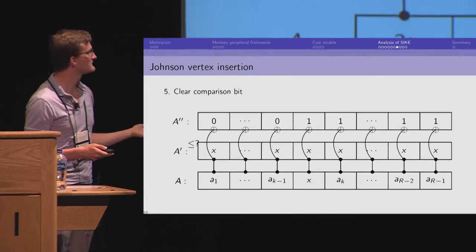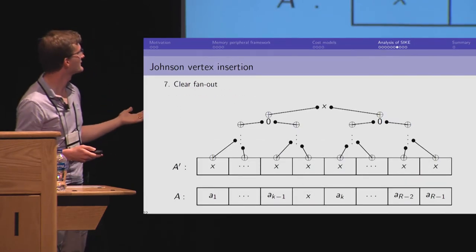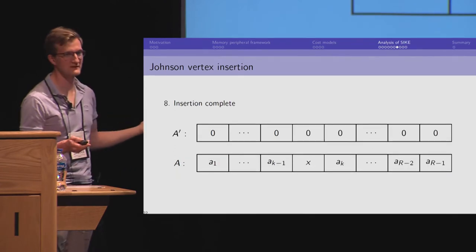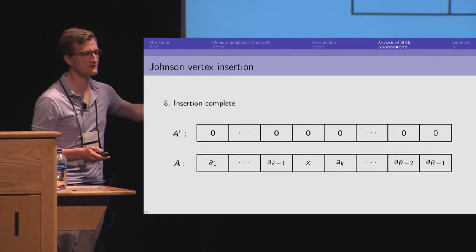And we've inserted x into the right spot. Now we need to uncompute. We do a comparison. We fan out x. And we have nothing. So, we have correctly inserted into our array with this structure.